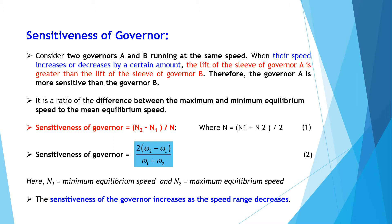That is, N_max minus N_min divided by N_mean, where N_mean is N_min plus N_max divided by 2, given by equation 1: N = (N1 + N2) / 2. Alternatively, the sensitiveness of the governor is given by equation 2: 2 × (ω2 − ω1) / (ω1 + ω2). The sensitivity of the governor increases as the speed range decreases.